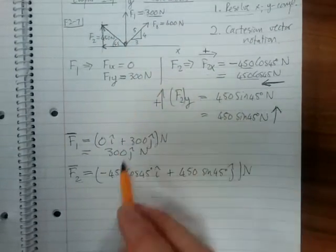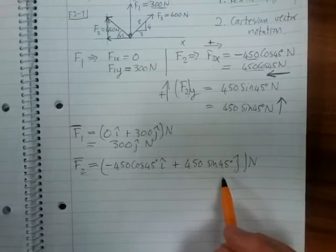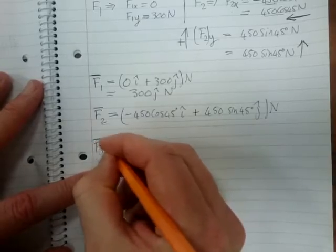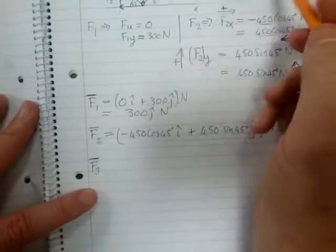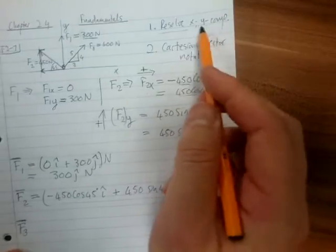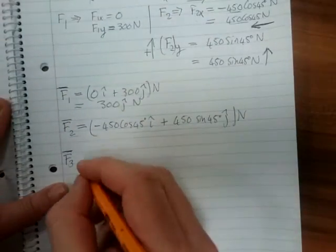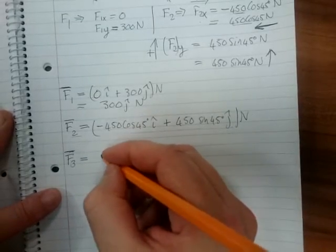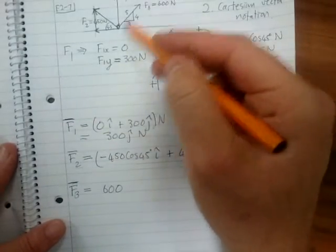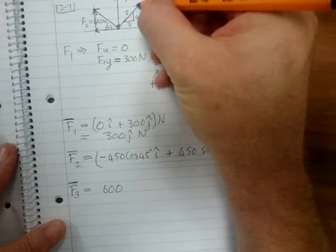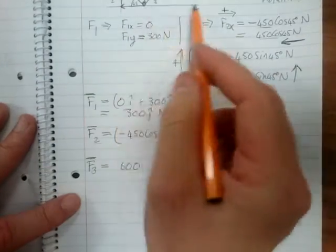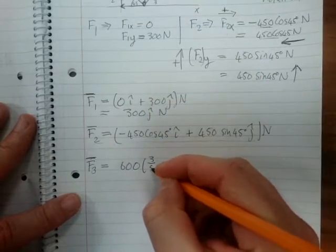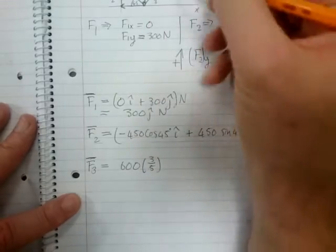I hope that's clear. And then F3, which I've unfortunately forgot to resolve in this form, we can just write it in Cartesian vector notation, which will be 600 because that is the magnitude of this vector, this force vector. And then how do we determine what the X component is? We multiply by 3 over 5. Please go and study the triangle slope representation under the scalar notation.